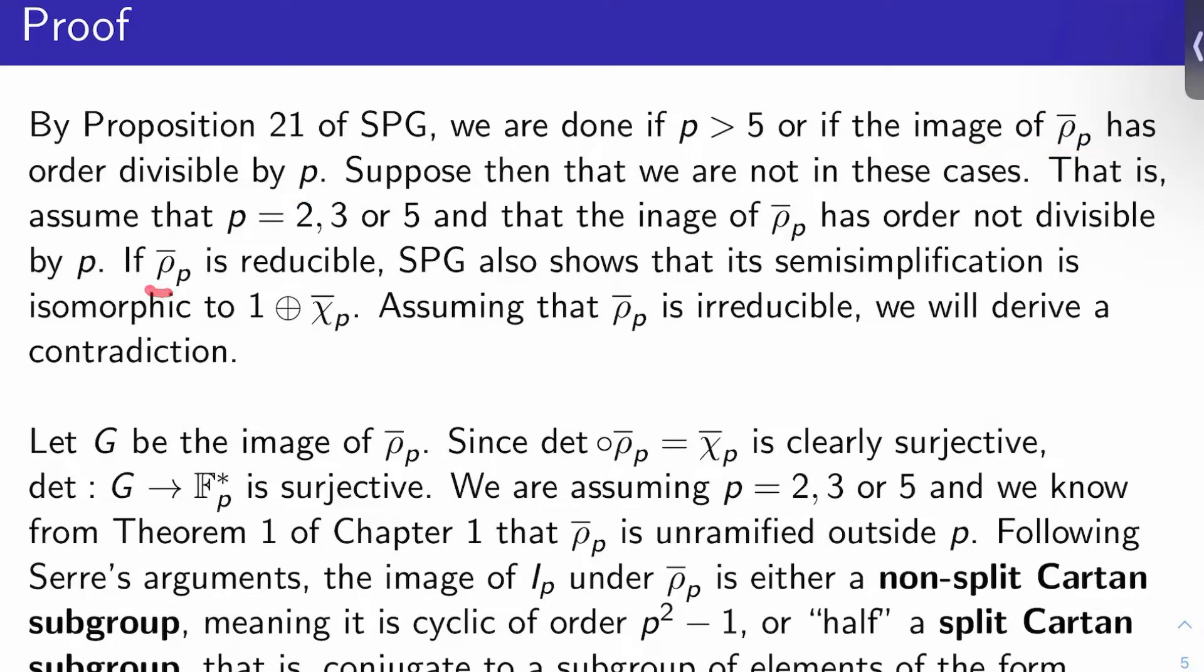So in other words, suppose P is 2, 3, or 5, and that the image of rho P bar does not have order divisible by P. If rho P bar is reducible, then Serre's paper also shows that the semi-simplification is isomorphic to 1 direct sum chi P bar, which is what the proposition claims. So here's what we'll do. We'll assume rho P bar is irreducible and we'll derive a contradiction.